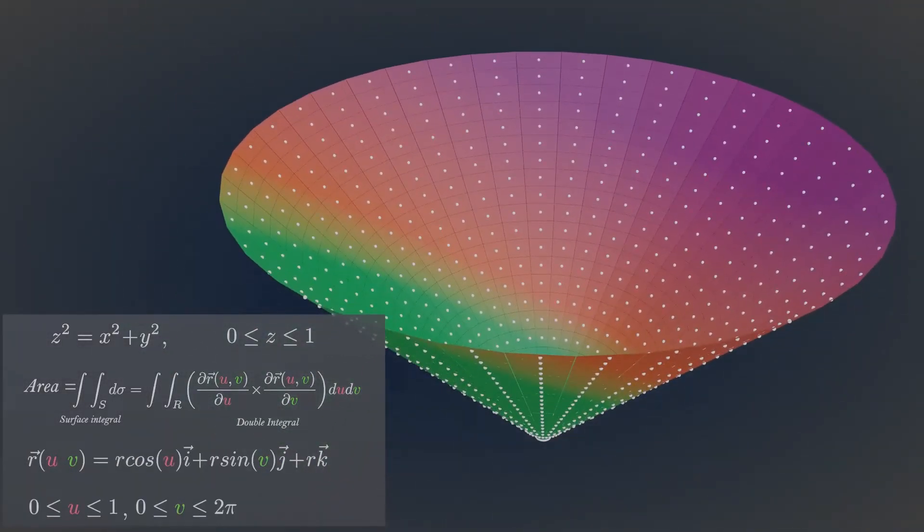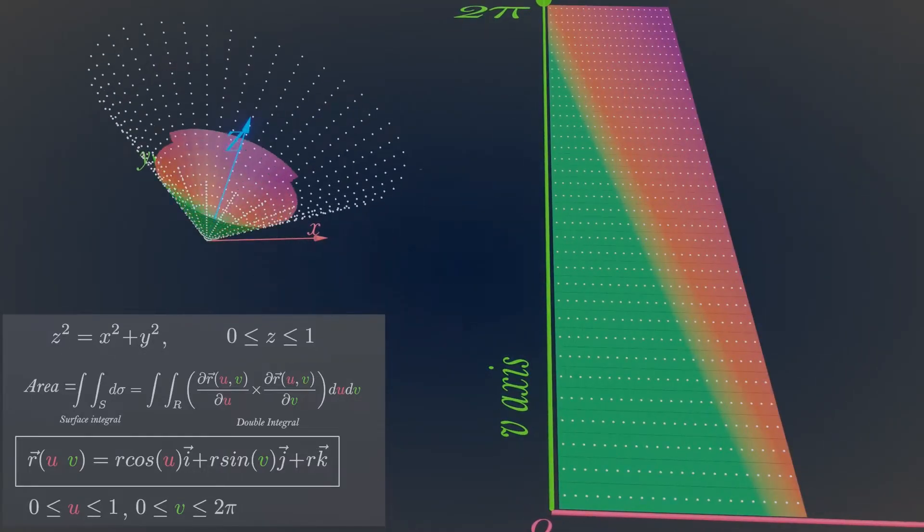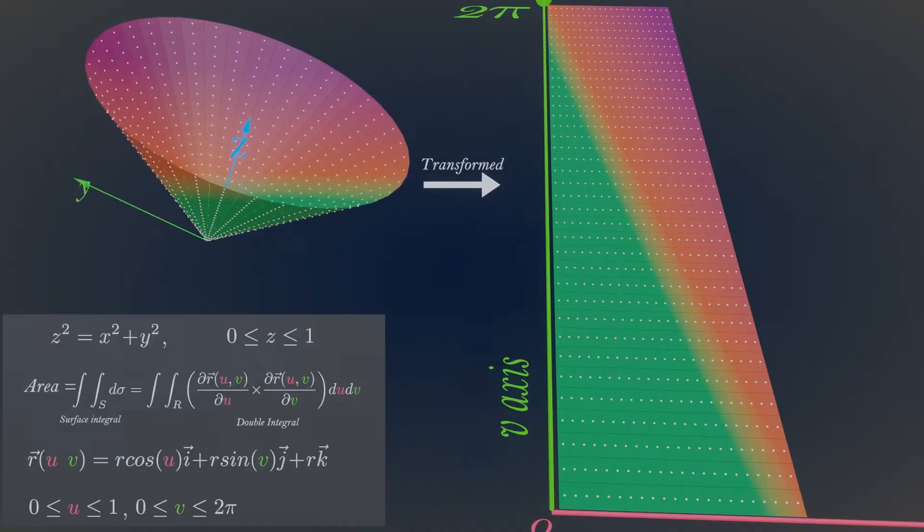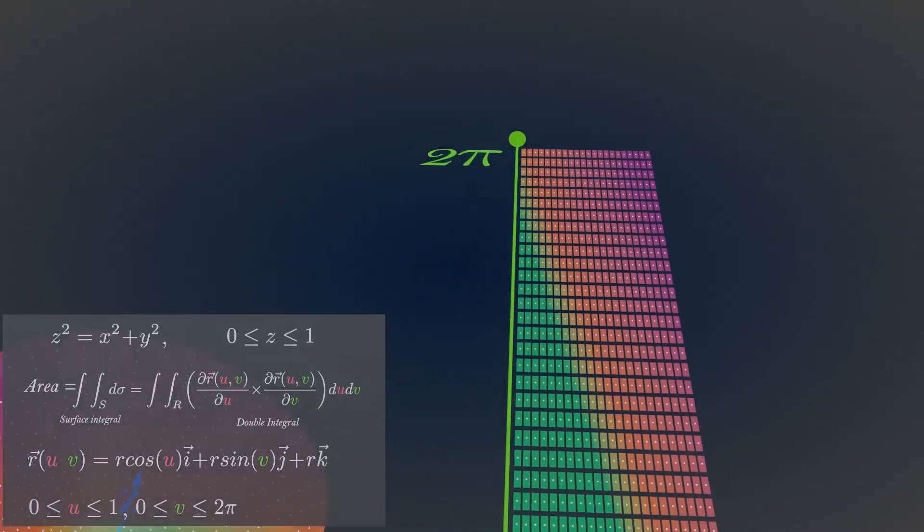Parametrizing this cone will just transform the 3D surface to a 2D plane. Look, how you just transformed X, Y, Z coordinate space to a UV plane. Now, you can use double integral to compute its area.